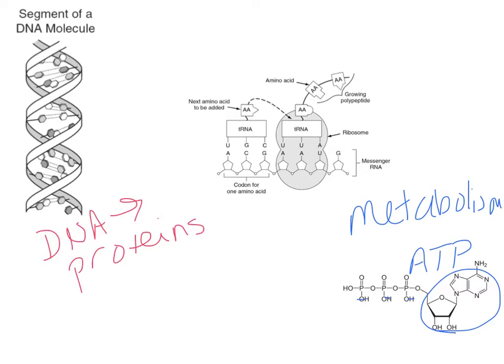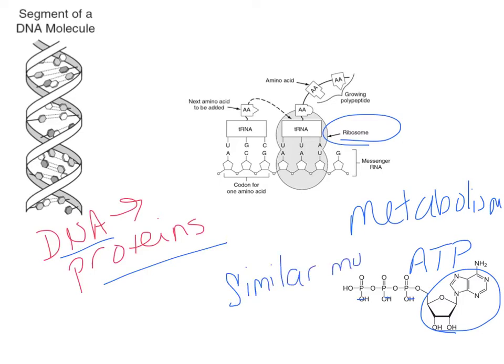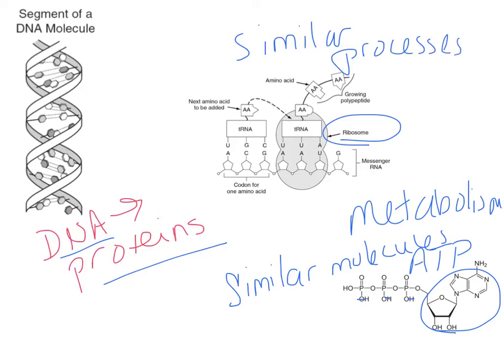All living things use ribosomes to translate DNA into protein. These are things all living things have in common with their metabolism — they use similar molecules, like ATP, and similar processes, like protein synthesis. All of these things show linkage to a common ancestor. They all rely on enzymes — various enzymes needed to carry out chemical reactions — and they all contain DNA.